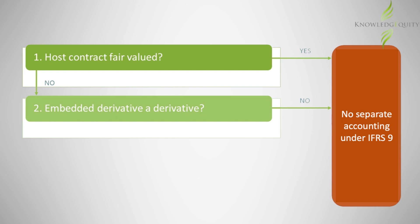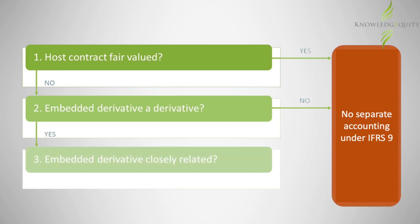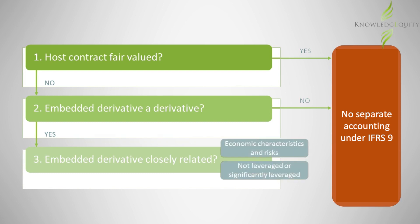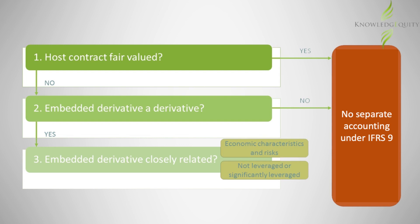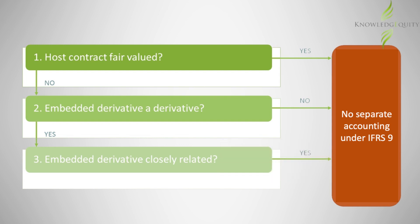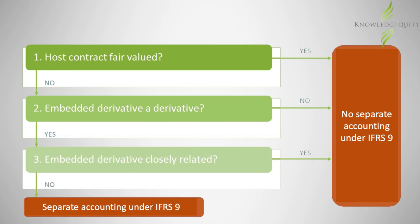Thirdly, is the embedded derivative closely related to the host contract? Here, we are looking at the economic characteristics and risks of the embedded derivative, to see how closely they relate to the host contract. To be closely related, the embedded derivative should not be leveraged. If the embedded derivative is closely related, then there is no need to separately account for it. However, if it is not closely related, then it needs to be separately accounted for.